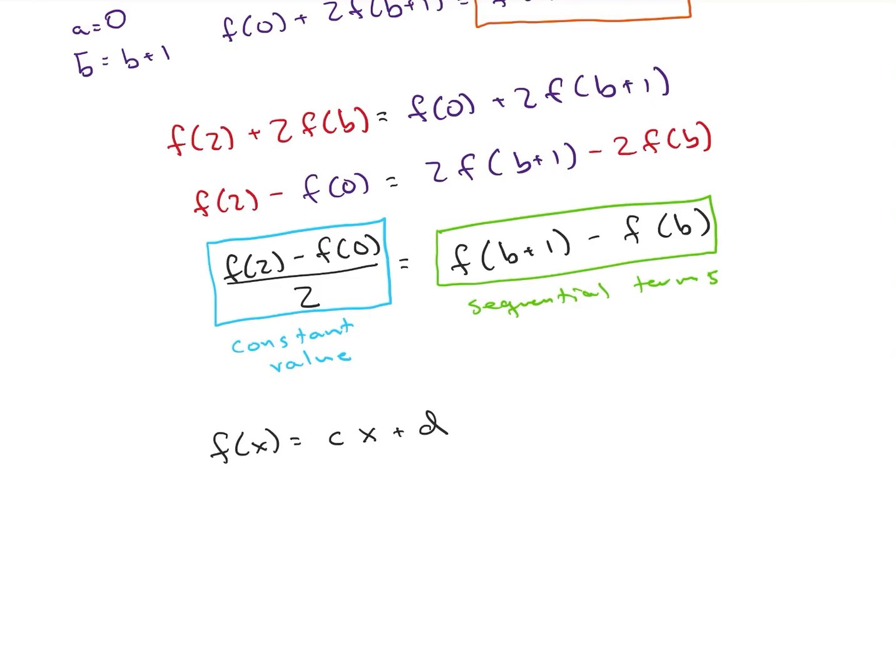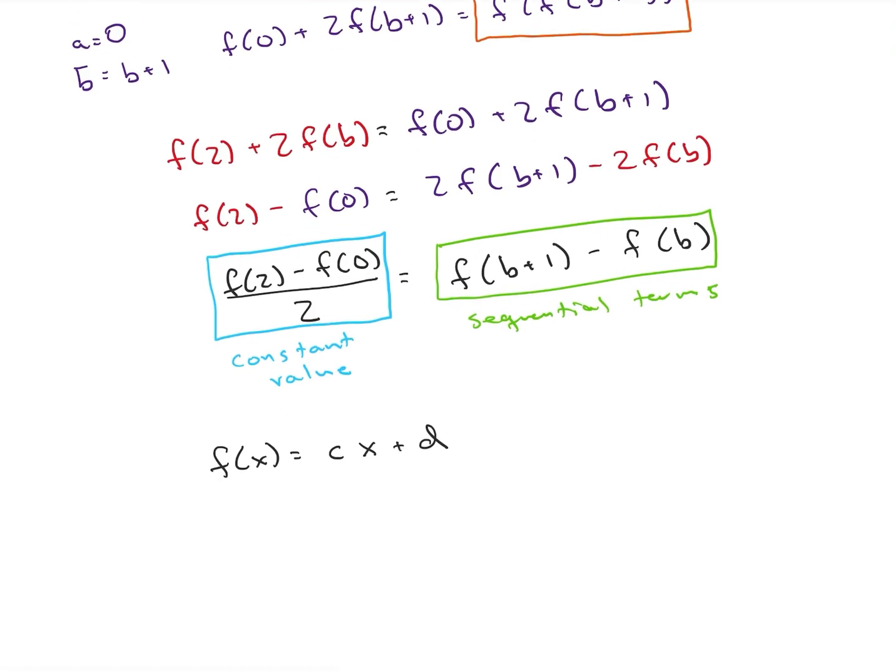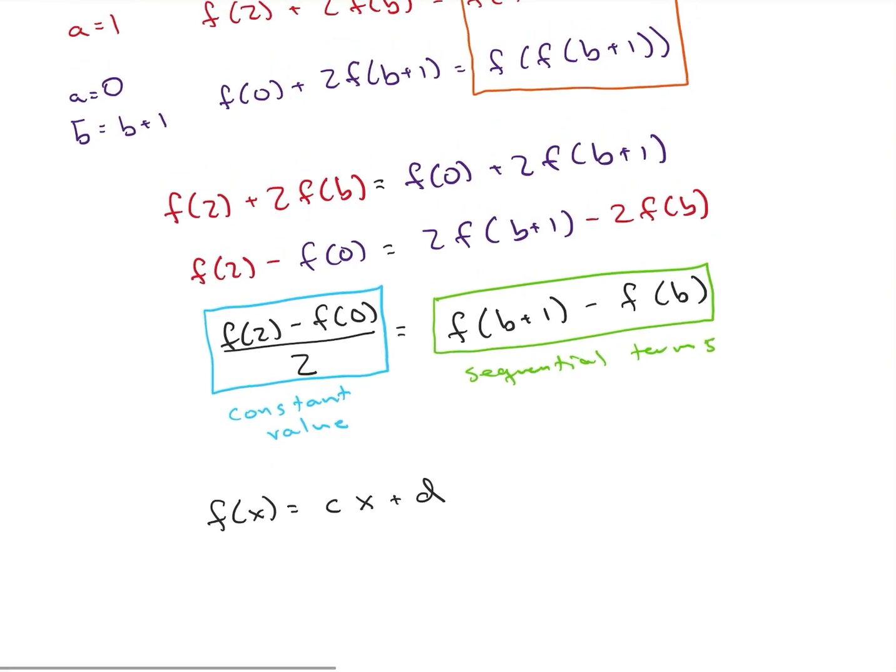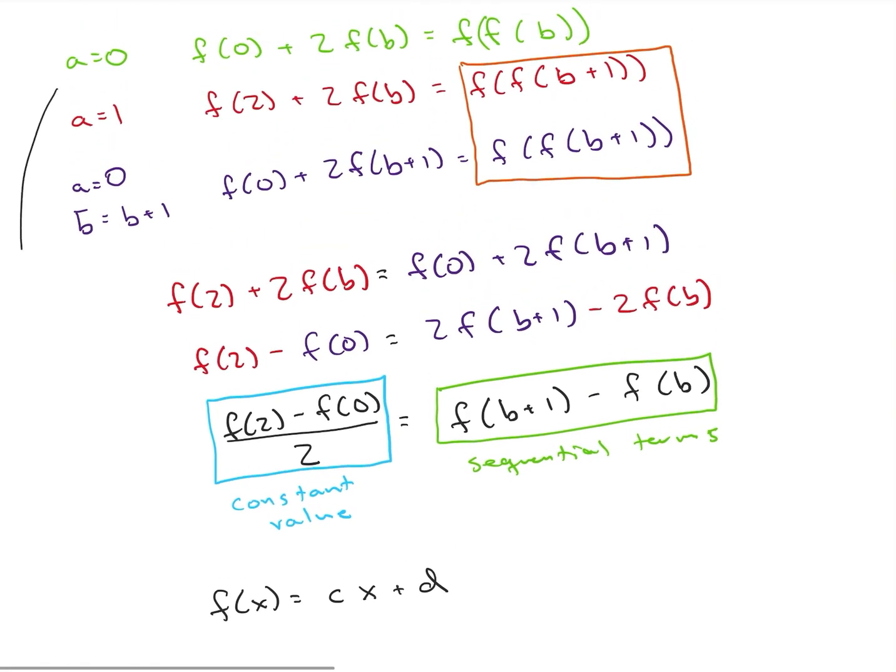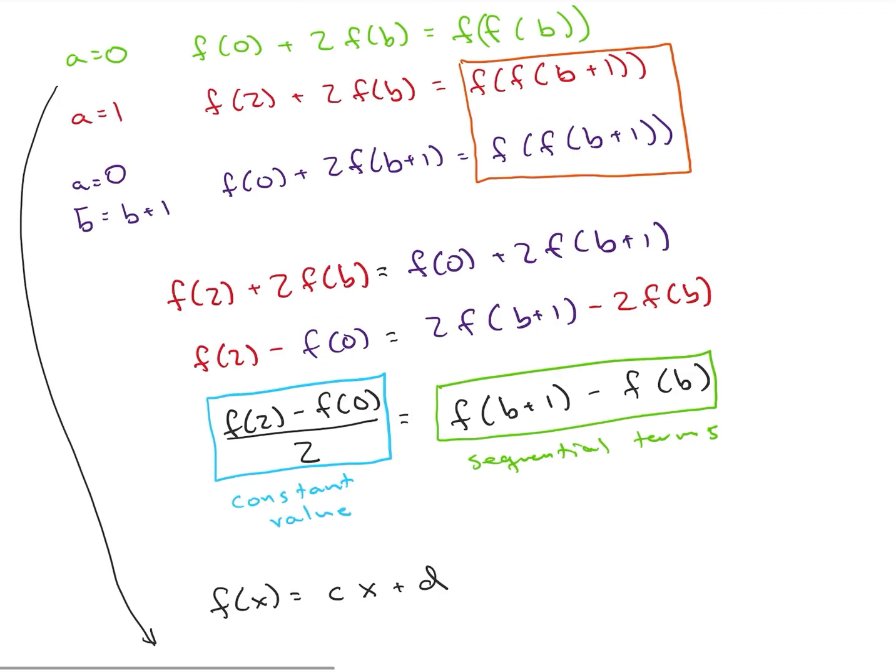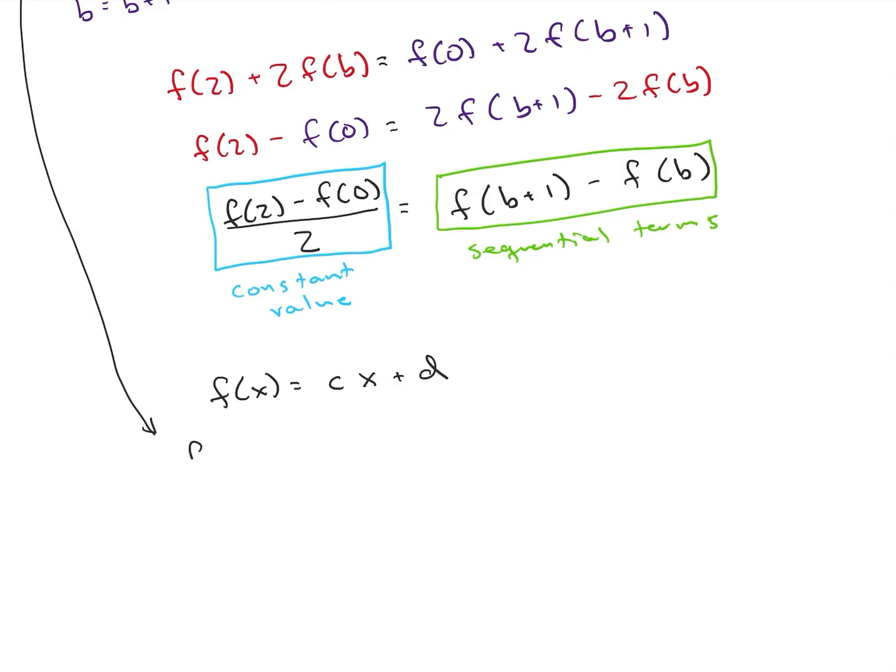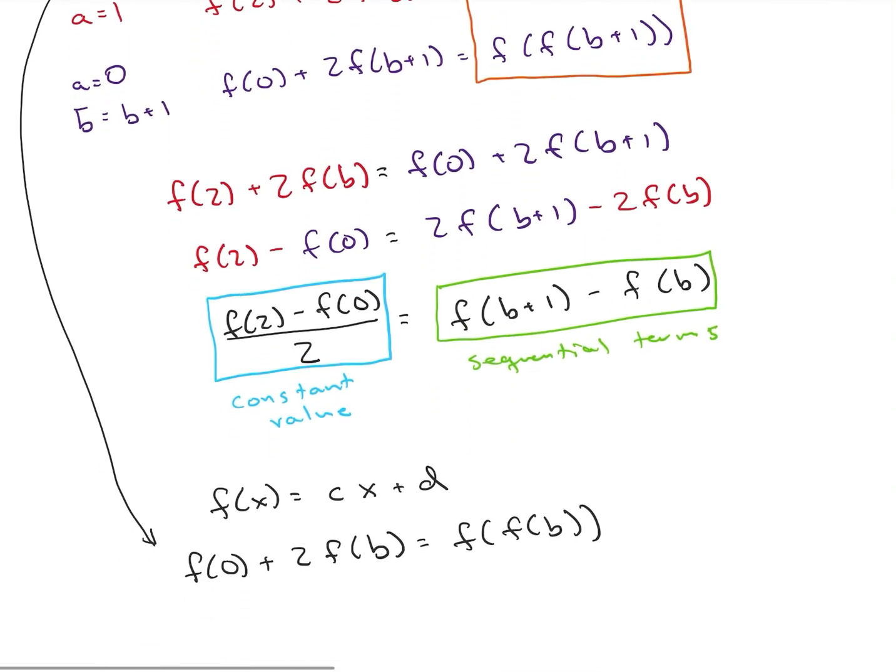Alright, so let's look at these different equations now. I have this value right here. Let's look back at my green equation and pull that down. So I have f of 0 plus 2f of b is f of f of b. Let's go ahead and use that.